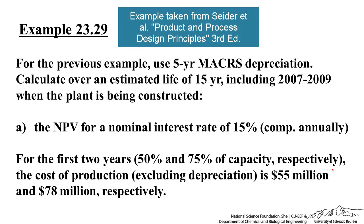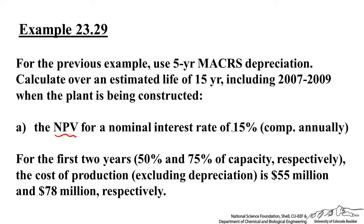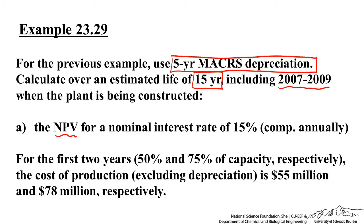Let's go over an example and calculate the net present value of a 15-year venture. It's being constructed from 2007 to 2009 and won't start operating until 2010. Instead of straight-line depreciation, we're going to use MACRS — the Modified Accelerated Cost Recovery Schedule — and we'll calculate the NPV with a 15% cost of capital as the interest rate.